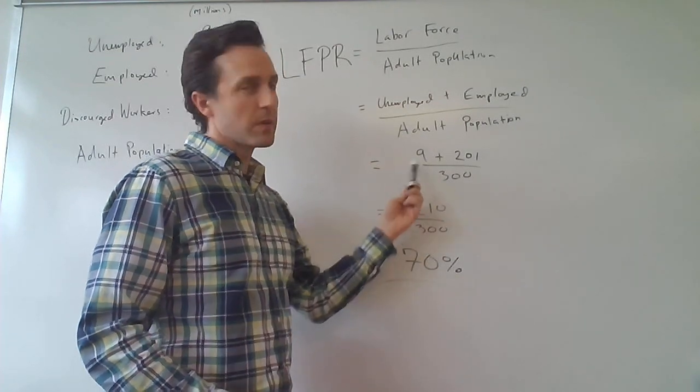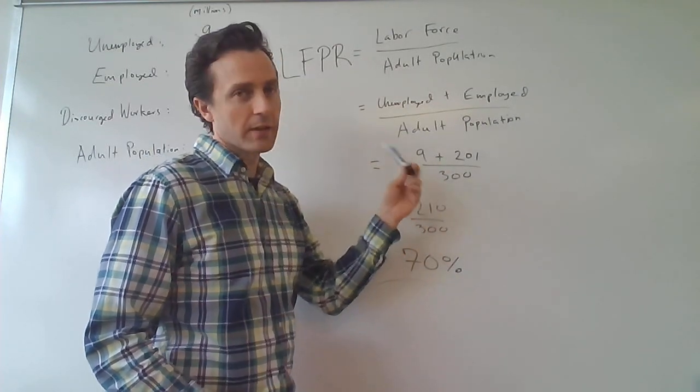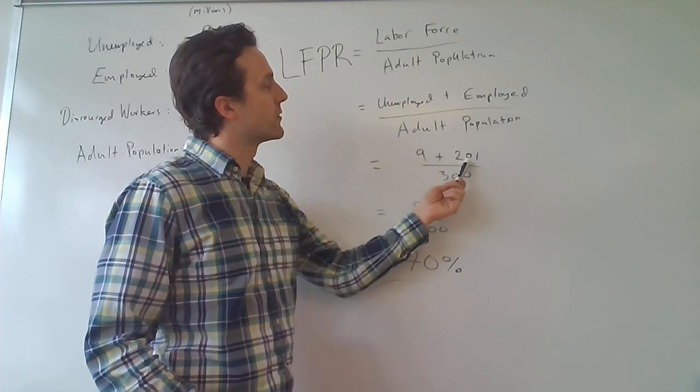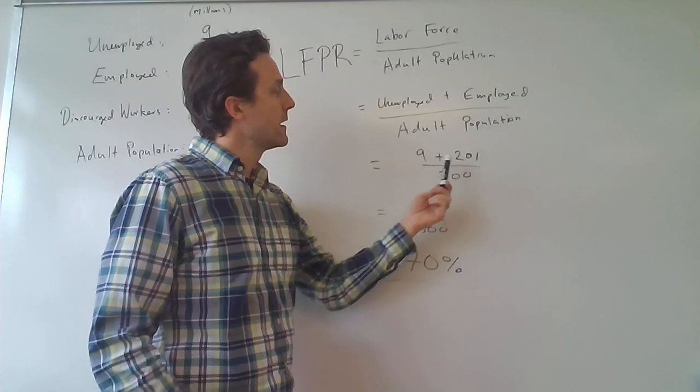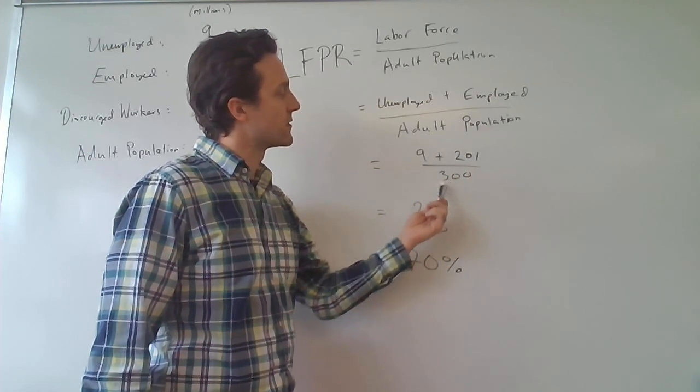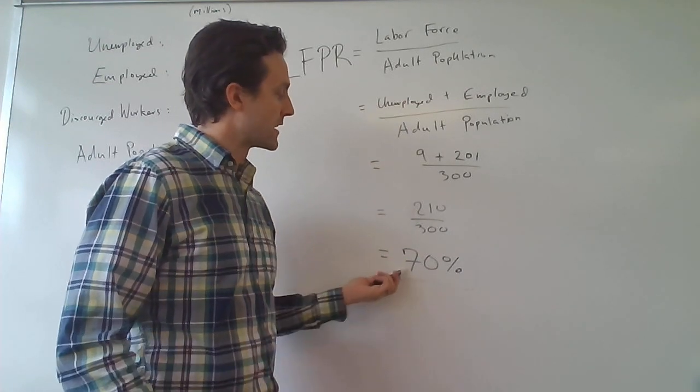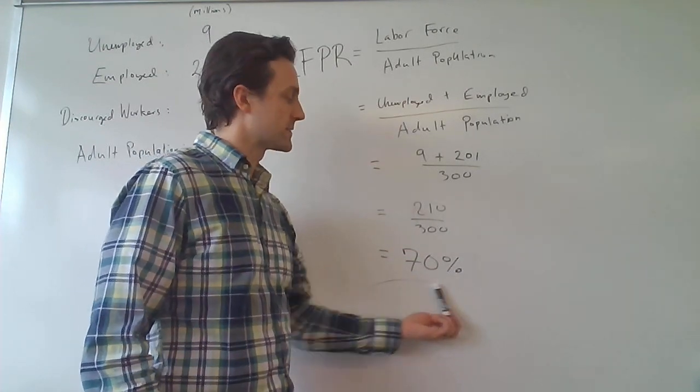So we know that in millions, and the millions will cancel each other out anyway, it's 9 million people who are unemployed, 201 million people who are employed, and then the entire adult population is 300. So we have 210 divided by 300, in percentage terms, that's going to be 70%.